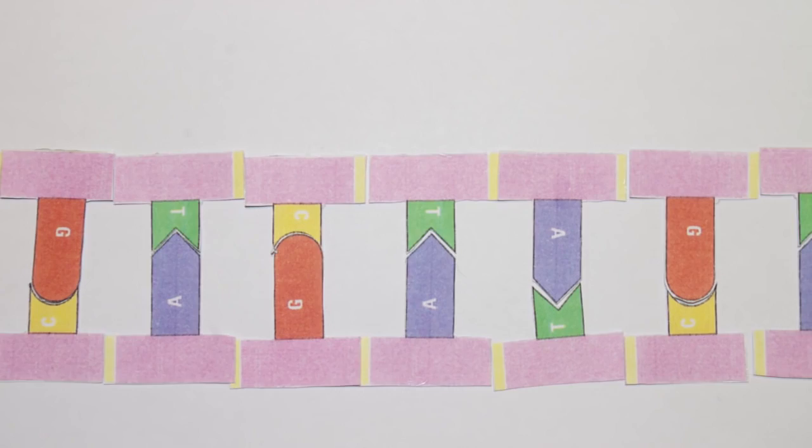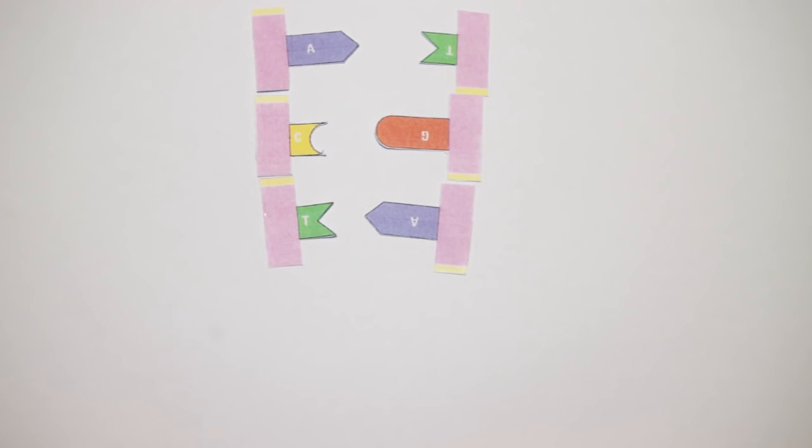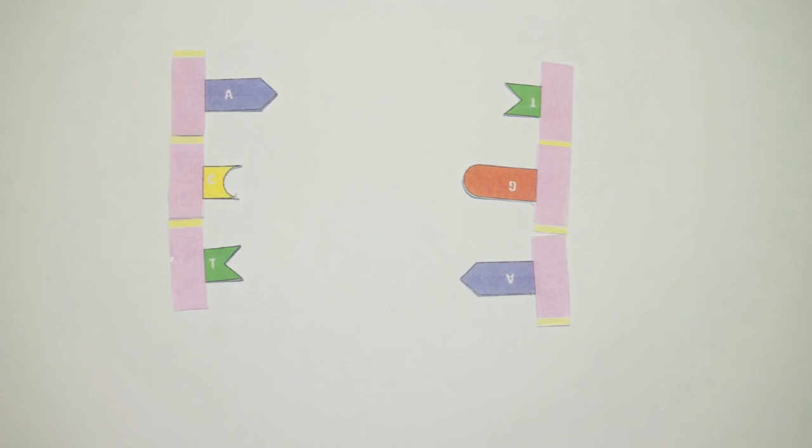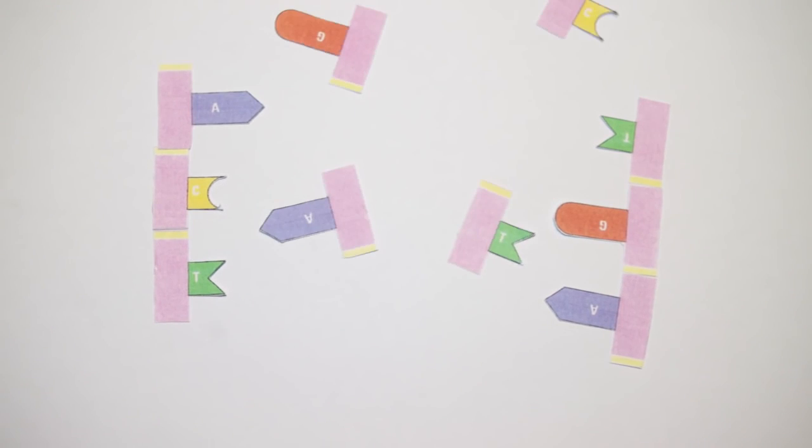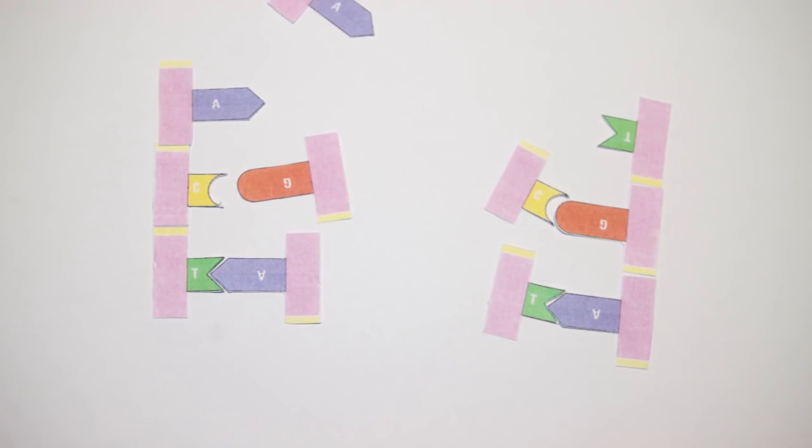So, given one strand of DNA, we can figure out its complementary strand, pairing up the bases. This is the secret ability that allows DNA to copy itself so efficiently.